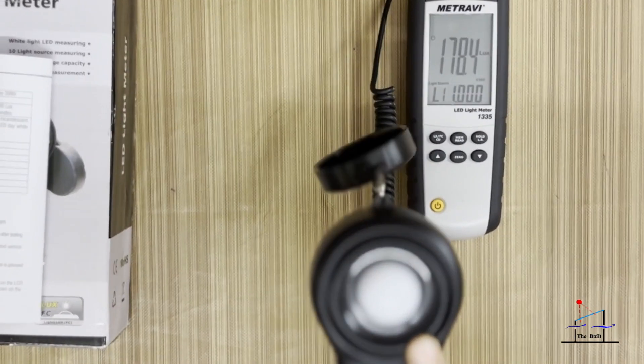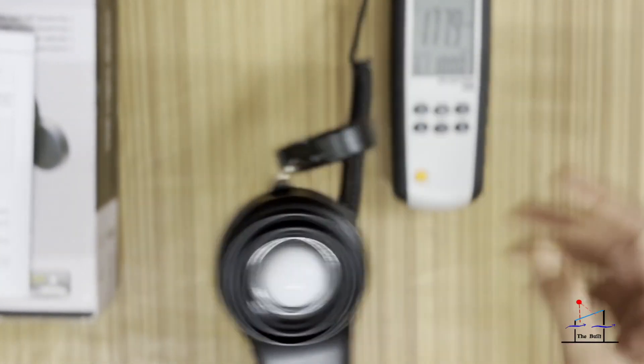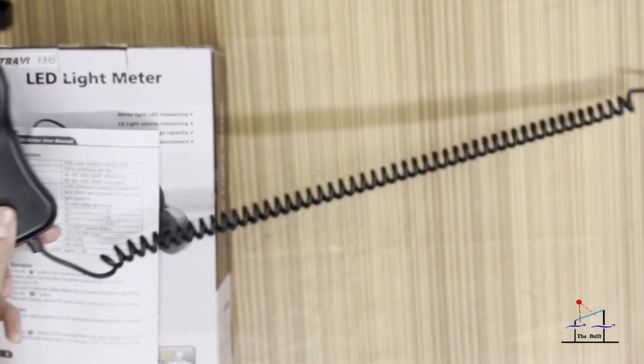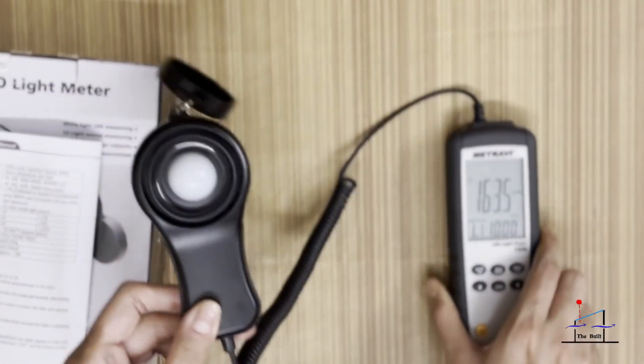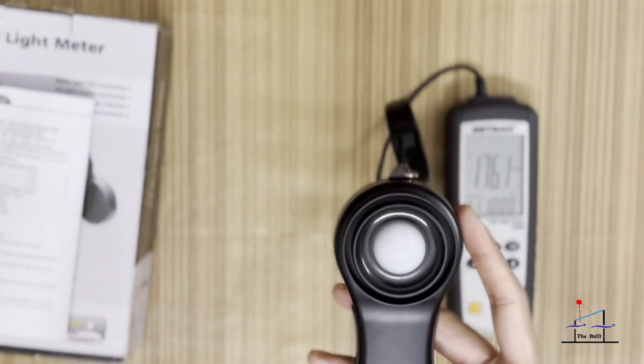This white part here is the photo sensor - this will measure the lux values. This comes with a 1.5 meter cable which makes it handy for us to take measurements.